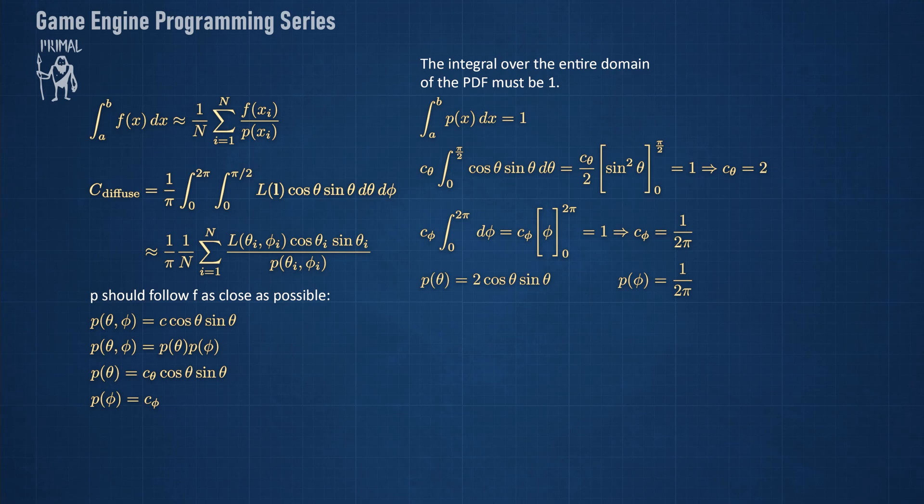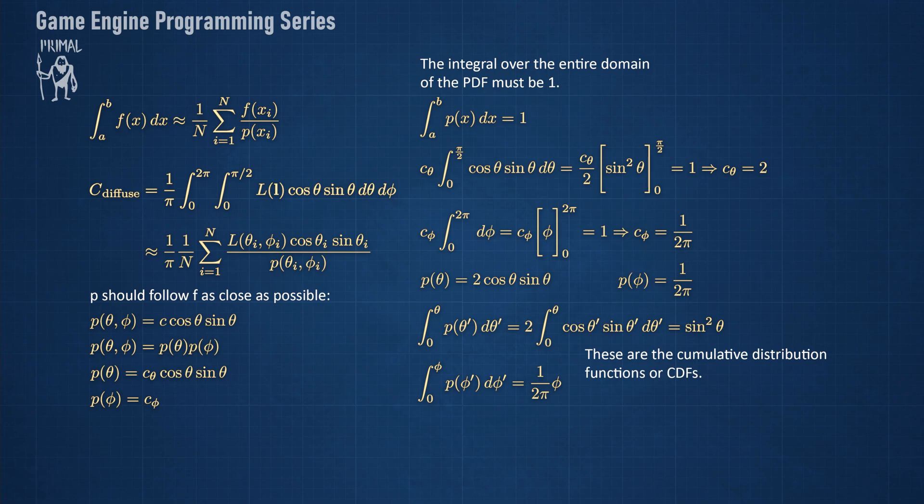Now, instead of taking the integral over the entire domain for each parameter, we can also look at how the integration result behaves as a function of that parameter. We can figure that out easily by integrating from 0 until some random theta and some random phi. We can see that for theta, the integration result behaves as the square of the sine of theta. For phi, it behaves as a constant. These functions are known as cumulative distribution functions, or CDFs.